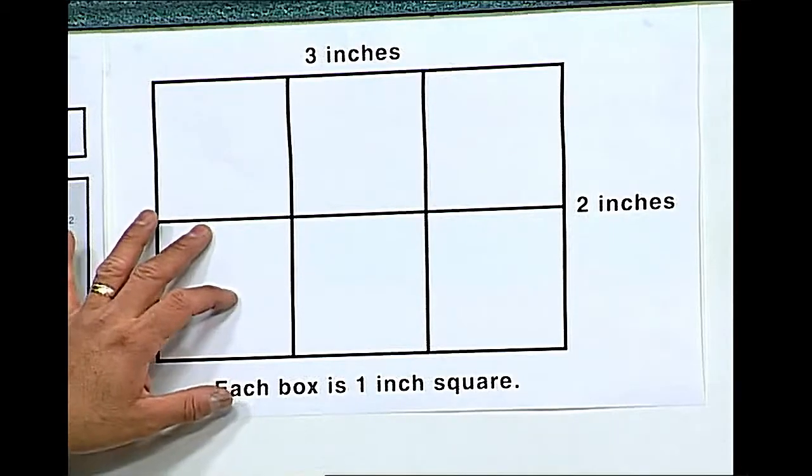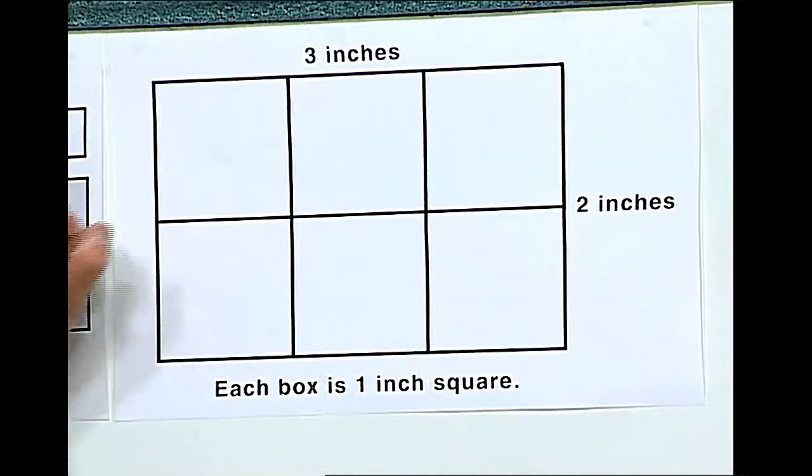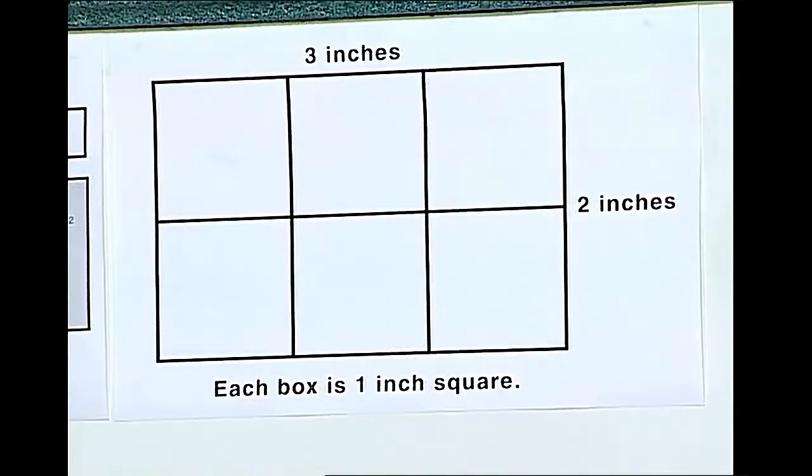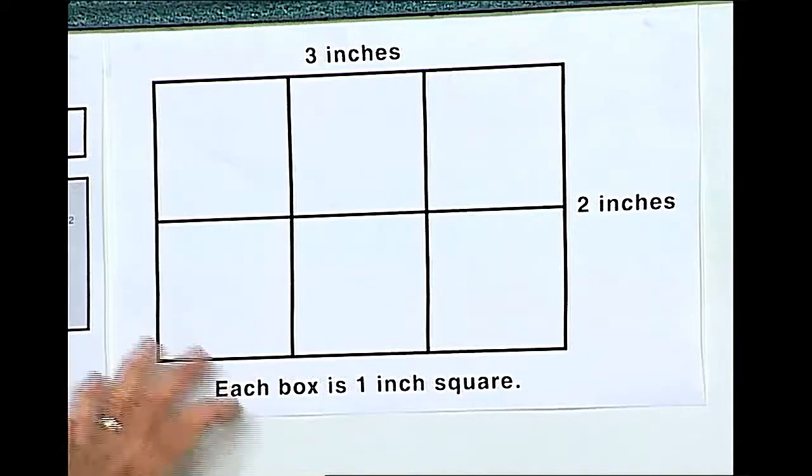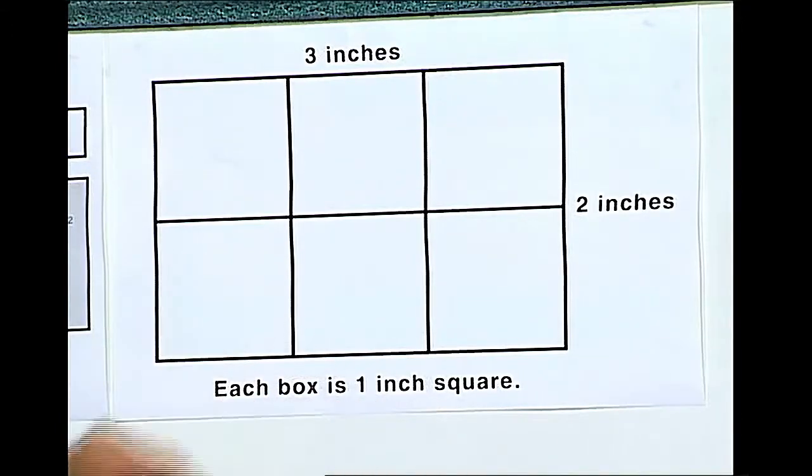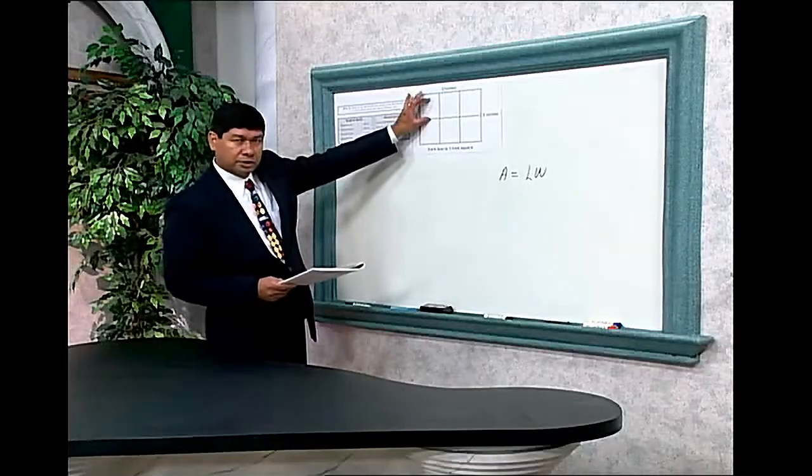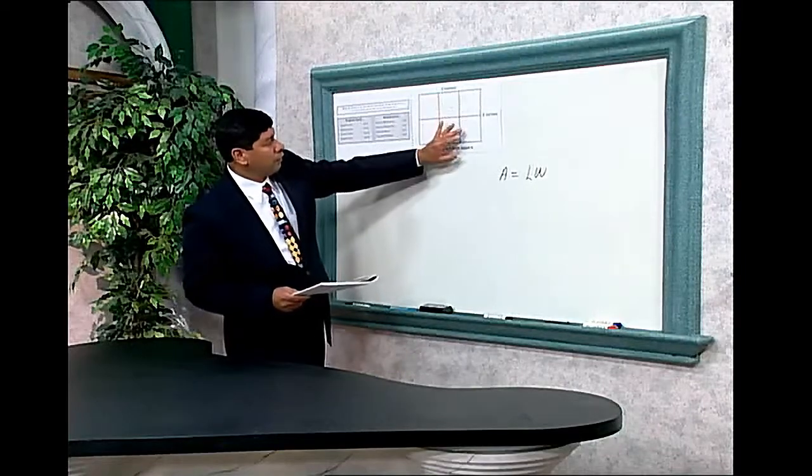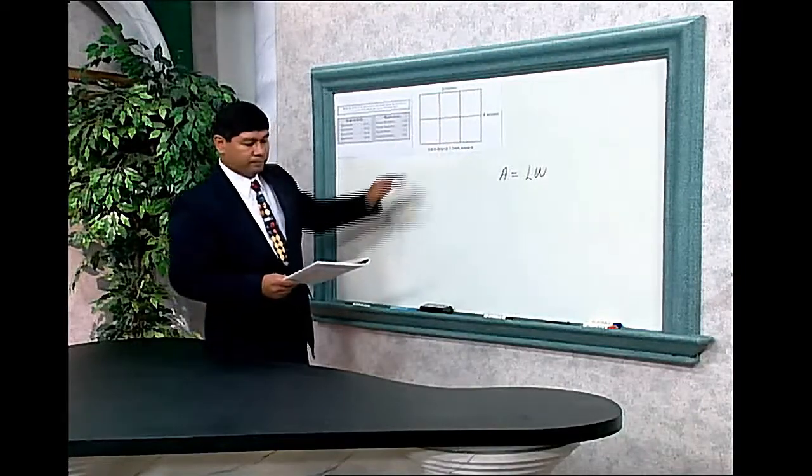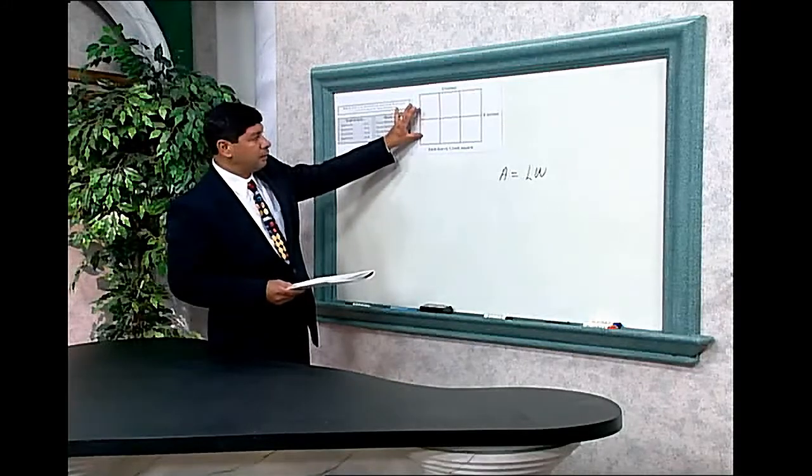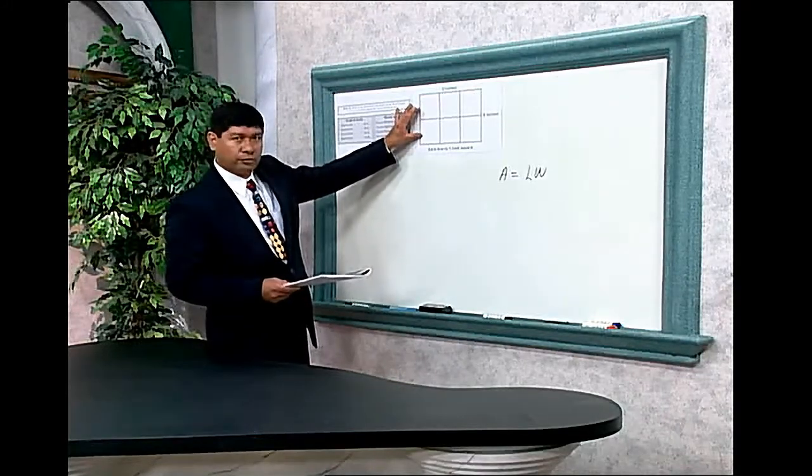This model represents a rectangle. Its length is 3 inches. Its width is 2 inches. We know that each box is 1 inch square, 1 square inch. Now let's add our representation of the inches. We have 1, 2, 3, 4, 5, 6. So we can see that this would represent a rectangle with 6 square inches.